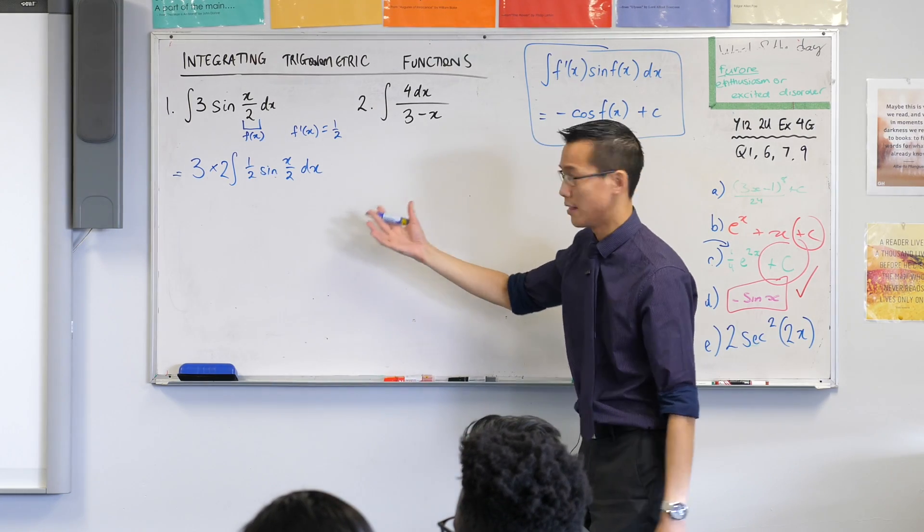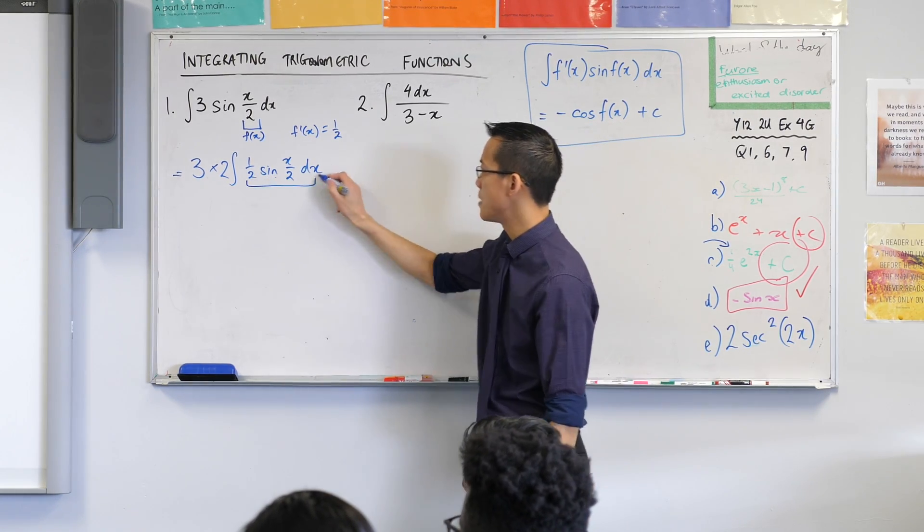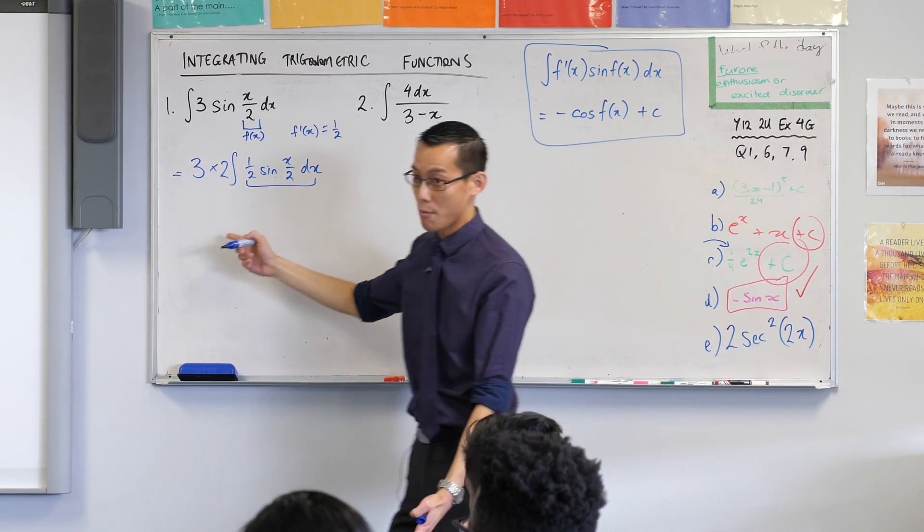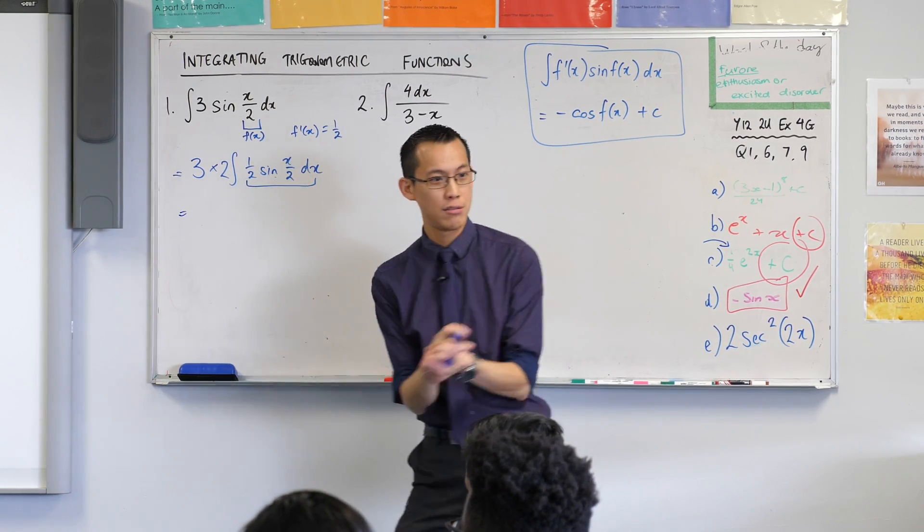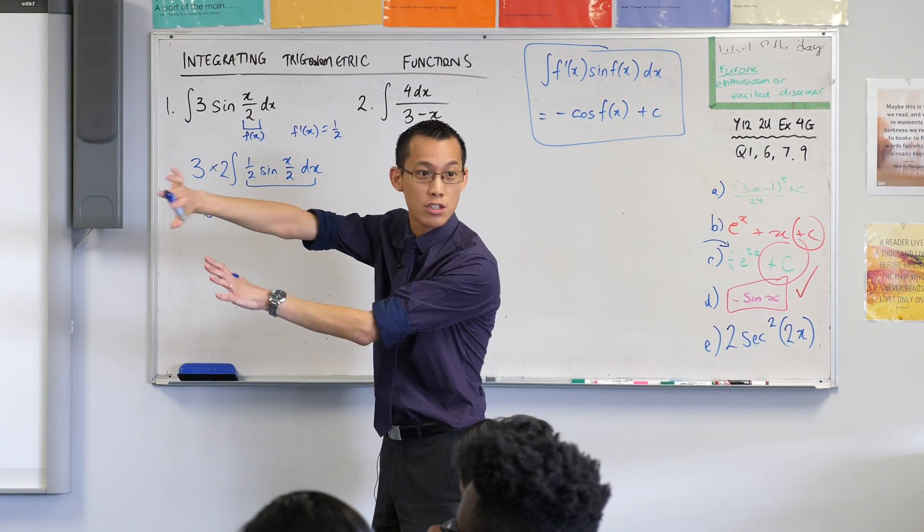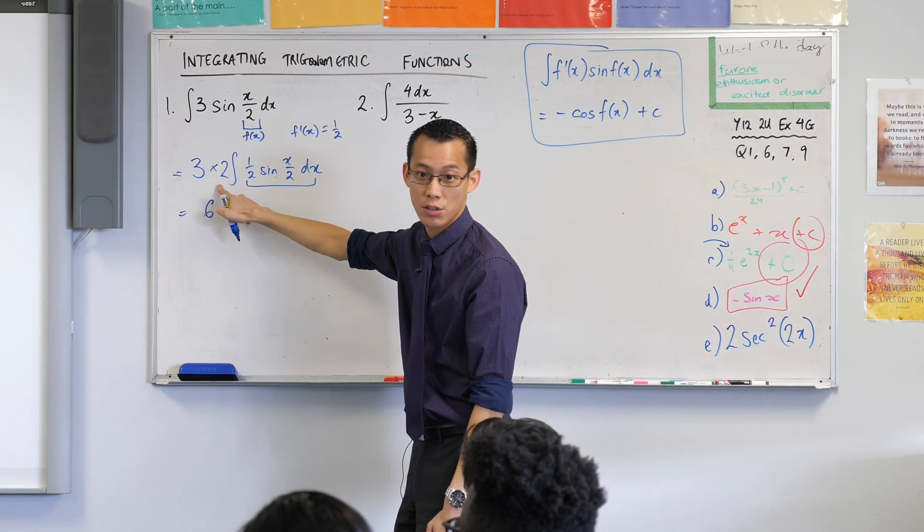Now you don't have to do it exactly like this, but for me it helps me use a scaffold I know that I have. Now I'm ready to go. This 3 times 2 at the front, what's it equal to? It's a 6 and I'm just going to leave it there because it kind of has nothing to do with the integration. It's outside of the integral altogether.